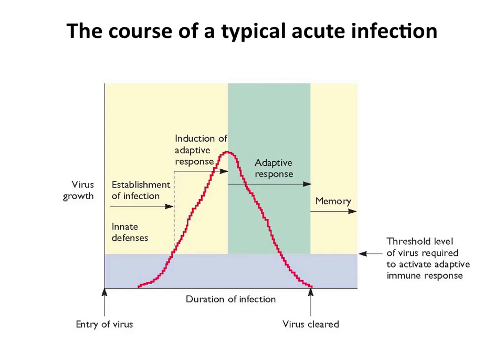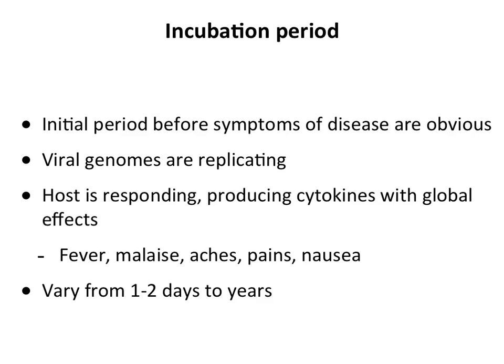Here's the course of a typical acute infection. The virus comes into you and begins to multiply. If it's not contained by the innate defenses, which kick in right away, it goes above a certain threshold that triggers the adaptive response. The adaptive response eventually controls the virus, it goes down and is cleared. You have your symptoms, you get well, and then you have memory so that if you're infected again you can have a more rapid response to prevent infection.